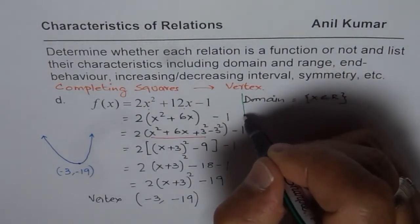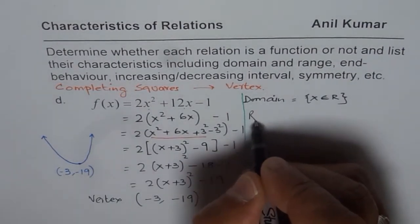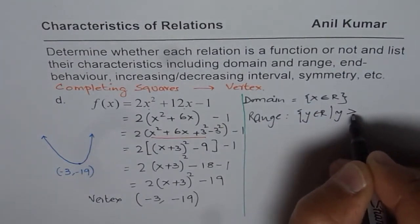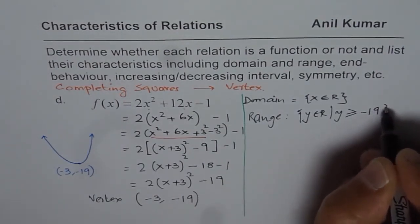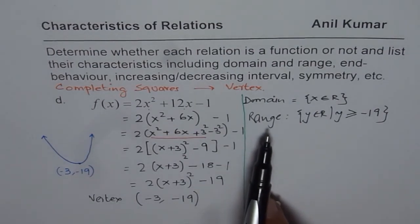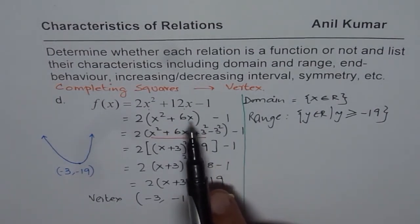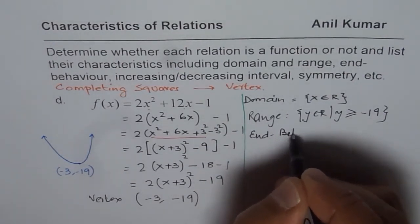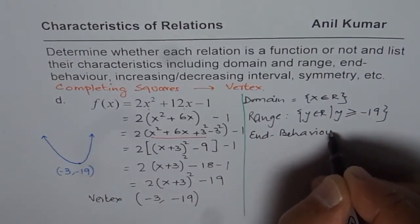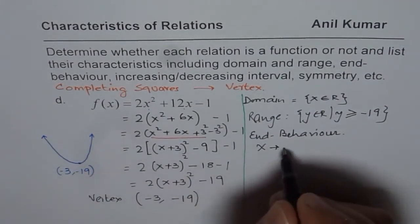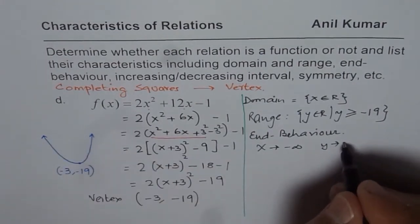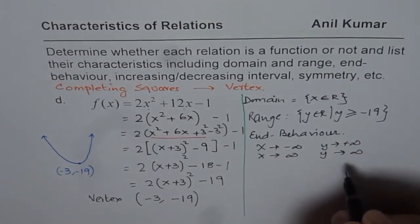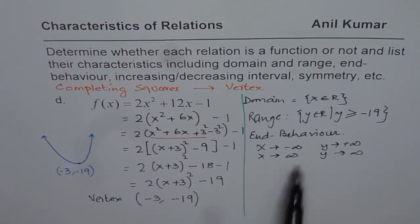So let me write down the characteristics on the right side. Range for us will be y belongs to real numbers such that y is greater than or equal to -19. So that is how we can get domain and range of a quadratic function written in standard form. Now, let us look into the other characteristics, end behavior. So end behavior is when x approaches negative or positive infinity, what happens to y? So when x approaches negative infinity, y approaches positive infinity. In both cases, the parabola opens upwards and therefore y approaches positive infinity. So that is the end behavior.